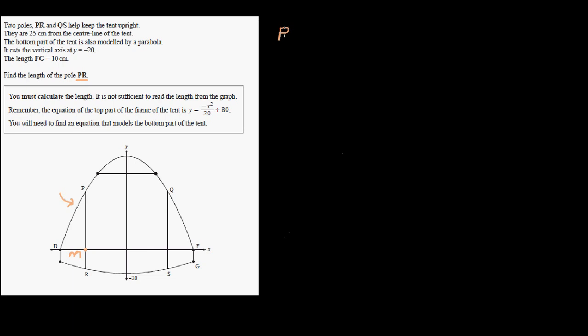Let me take a point M here. So if we want PR, what we're going to do is: if we can find PM and if we can find MR, that will give us PR.